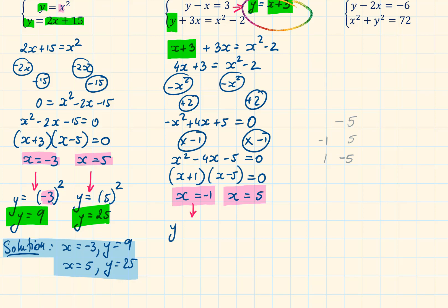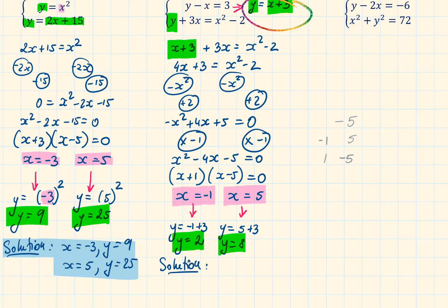We have y equals minus 1 plus 3, so y equals 2. Following the same method, y equals 5 plus 3, which is 8. Now we have everything we need to write down the final solution. When x equals minus 1, y equals 2. When x equals 5, y equals 8.